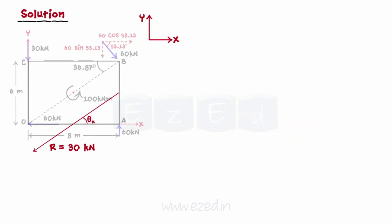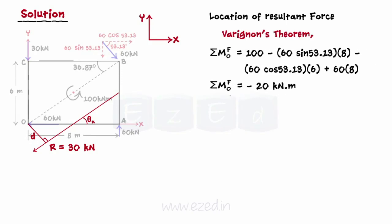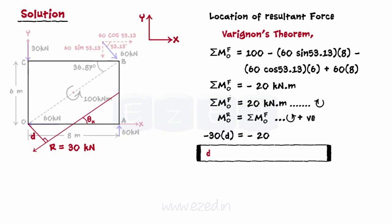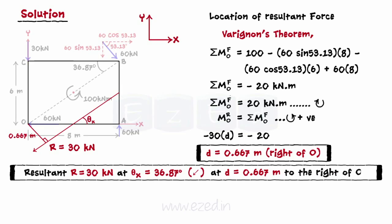Now we have to find the exact location of the resultant from the point O. For that purpose, we will use Varagnon's theorem. We will first find the summation of moments of all forces about the point O. On equating this with the moment of resultant about point O, we find that the resultant acts a distance of 0.667 meters to the right of O. Thus, we have calculated the resultant to be equal to 30 kN at an inclination of 36.87 degrees, located at a perpendicular distance of 0.667 meters to the right of O.